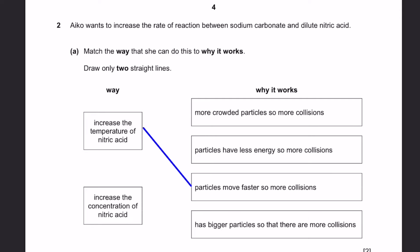Now, the second one: Increase the concentration of nitric acid. More crowded particles, so more collisions. Well, if we increase the concentration of nitric acid, it means there are more nitric acid particles, which means that actually the particles are more crowded. And therefore there are more collisions. So that's also correct. Increasing the concentration of nitric acid doesn't make the particles bigger - that's why this is wrong. It only makes more particles of nitric acid.